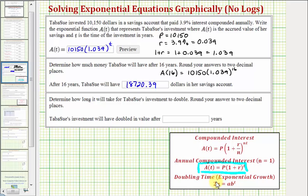Notice in our case, the initial investment was 10,150, so to set up the equation to find the doubling time, we would have A(T) equals two times 10,150 equals 10,150 times 1.039 raised to the power of T. Well, two times 10,150 would be 20,300.